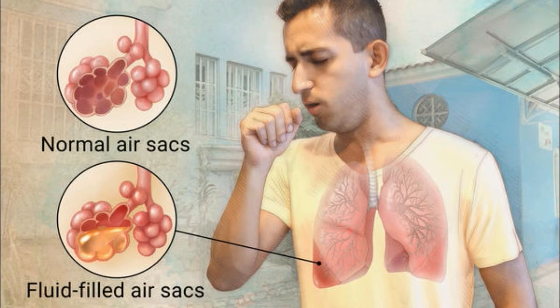Risk Factors: While most healthy children can fight the infection with their natural defenses, children whose immune systems are compromised are at higher risk of developing pneumonia. A child's immune system may be weakened by malnutrition or undernourishment, especially in infants who are not exclusively breastfed. Pre-existing illnesses such as symptomatic HIV infections and measles also increase a child's risk of contracting pneumonia.